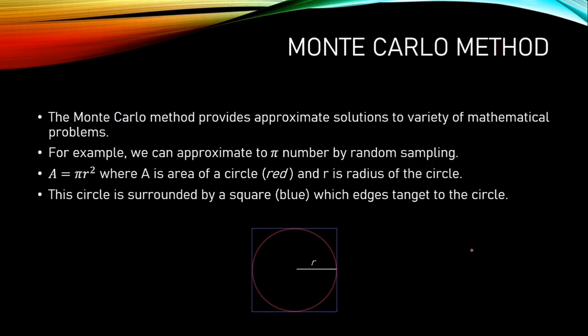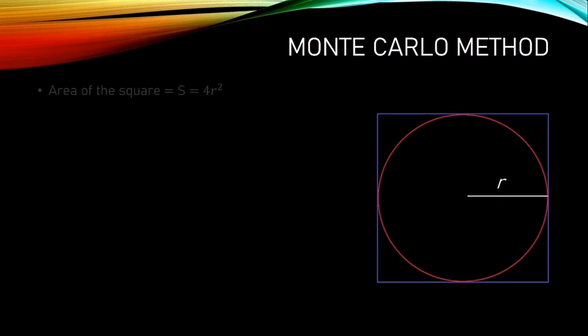Here is an example of how randomly generated numbers can help us. For example, we can approximate to pi number by random sampling. Random sampling means choosing random elements from the data. In here, we have a circle surrounded by a square, which is tangent to the circle. And the area of the circle is π times r squared.